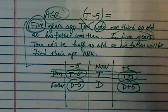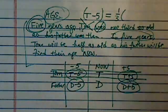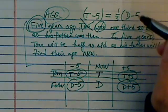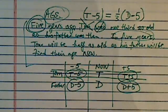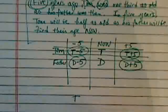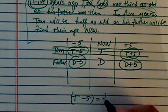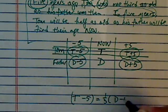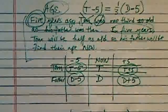Was means equals to one-third as old as his father. Well, that back then is D minus five. So you're writing this equation in terms of five years ago. The first equation we have is T minus five equal to one-third of D minus five. D is the father's age.